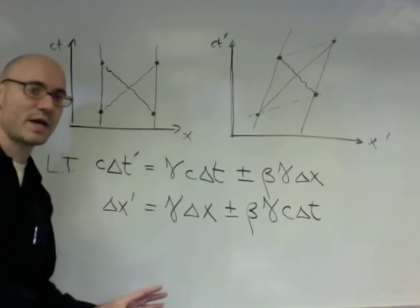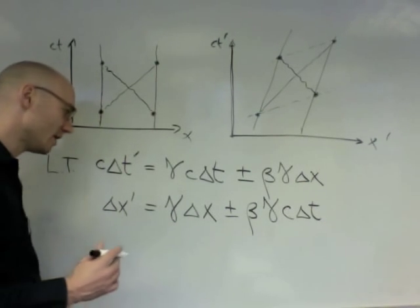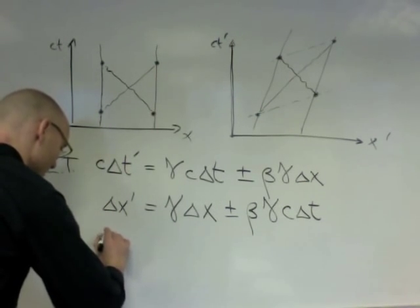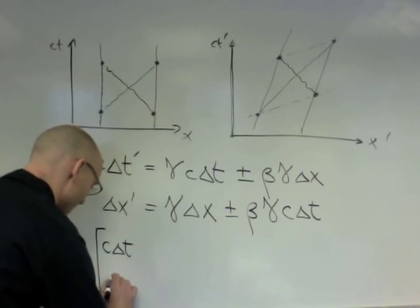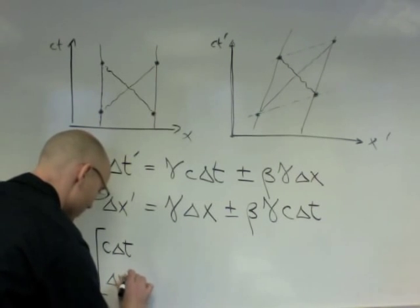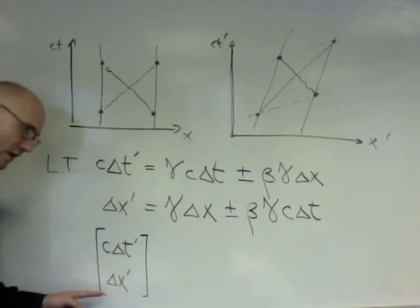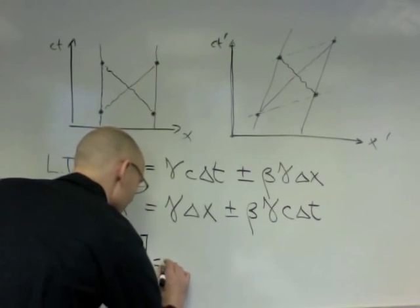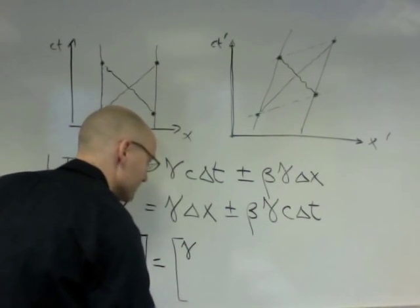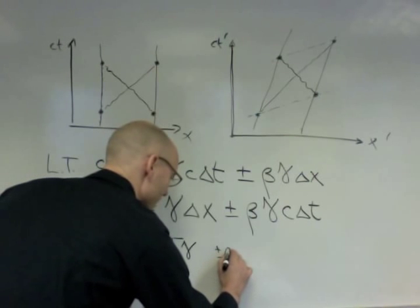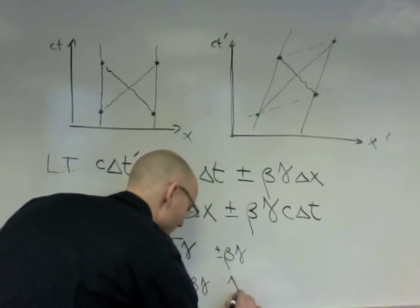So you can write this, I mentioned that for the math nerds, there's a way of thinking about this in terms of linear algebra. The linear algebra way of thinking about this, and I'm not going to explain this, I'm just going to write it on the board, is that you can think of it as c delta t and delta x prime, the prime's coordinates, as forming a column matrix or a column vector, and this is related to the original coordinates by matrix, which looks like gamma plus or minus beta gamma, plus or minus beta gamma, gamma.